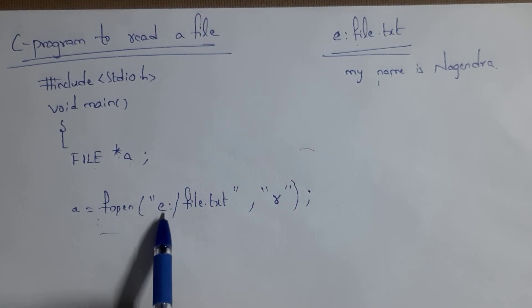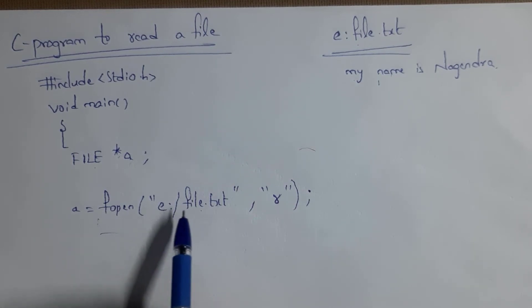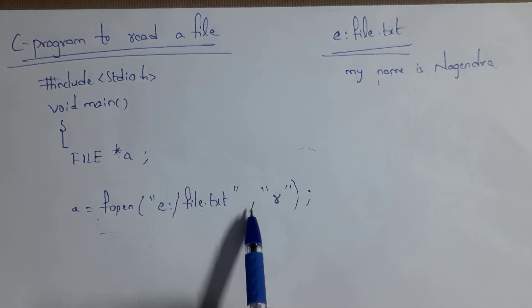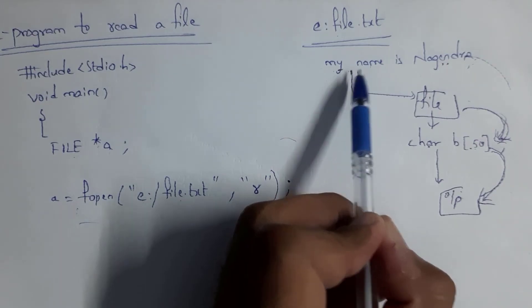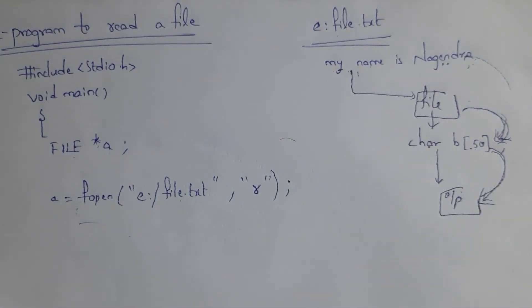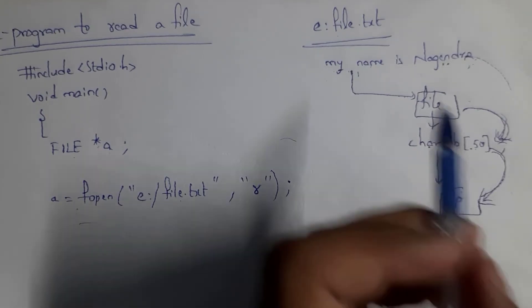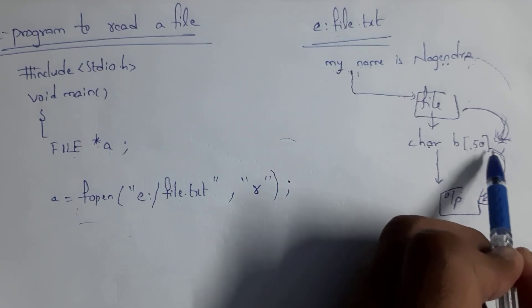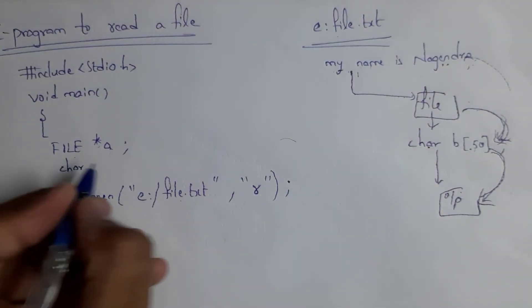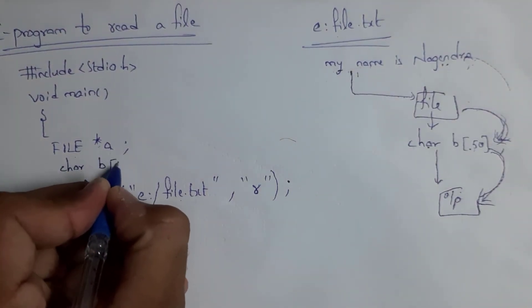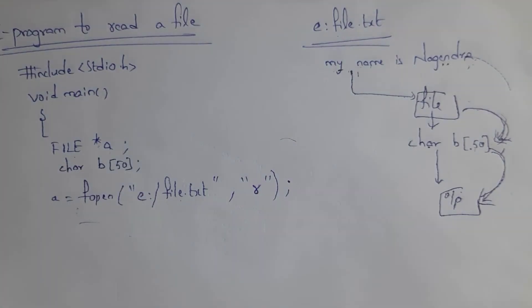To open the file, I give the address as local disk E and the file name as file.txt, using read mode 'r'. To display the file information on screen, I first create a string variable: char B[50]. This can store up to 50 characters. Then I open a while loop with the condition while fscanf(A, "%s", B) != EOF — by using fscanf we transfer file information from A to B, reading until the end of the file.